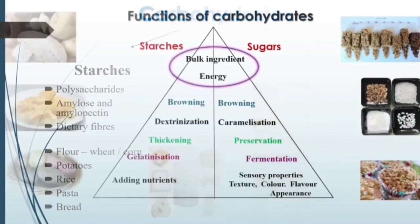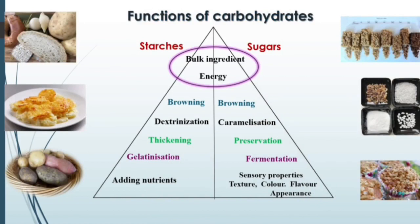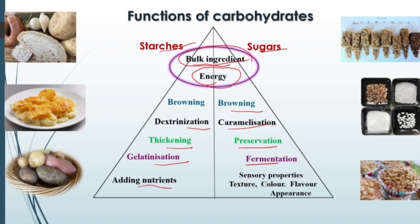Both sugar and starch are considered bulk ingredients in a food product. For example, in a bakery product, the bulk ingredient — the major ingredient — would be flour or sugar. It also provides energy upon consuming. Different functions of carbohydrates include browning, caramelization, preservation, fermentation, dextrinization, thickening, gelatinization, adding nutrients, and improving sensory properties like texture, color, flavor, and appearance.